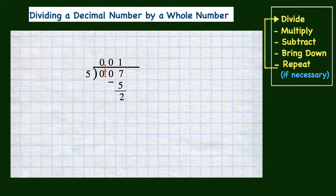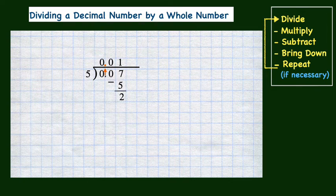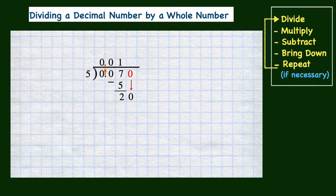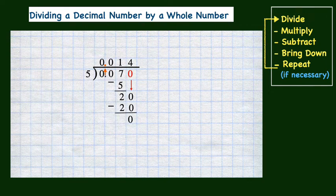Now we have a problem. There are no digits to bring down from the dividend, and we do not have a zero remainder or a repeating pattern in the quotient. So what we need to do is to add a zero to the dividend. Since the dividend is a decimal number, this zero does not change the value, but it allows us to continue the division process. We will bring it down and continue dividing. Five divides into 20 four times. Four times five is 20. 20 minus 20 is zero. Now that we have a zero remainder and no digits left in the dividend to bring down, we are done.